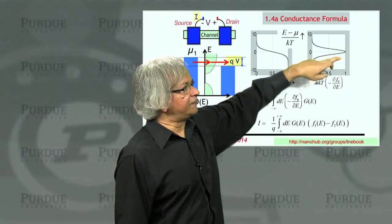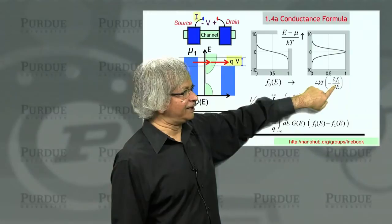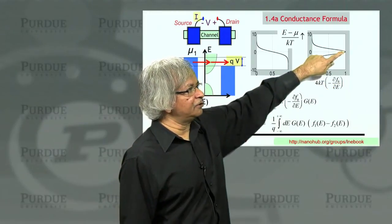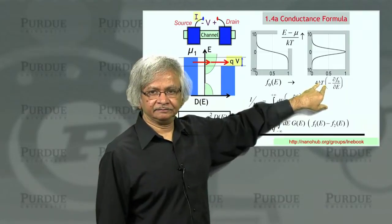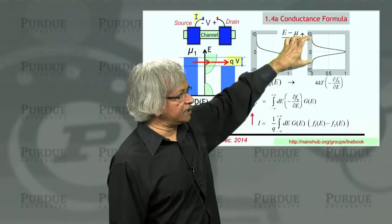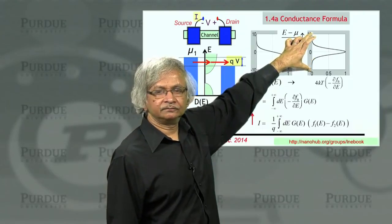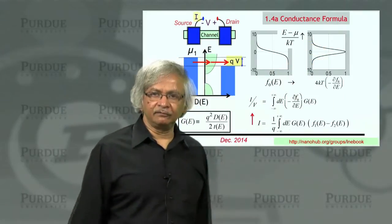That peak value, what we have plotted here is 4kT times del F del E. So the peak value of this derivative is actually 1 over 4kT. And as you go away from the electrochemical potential, it gradually goes to zero, and the range over which it goes to zero is roughly 4kT.